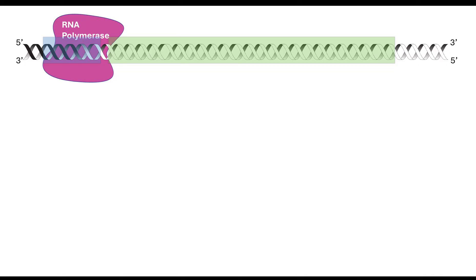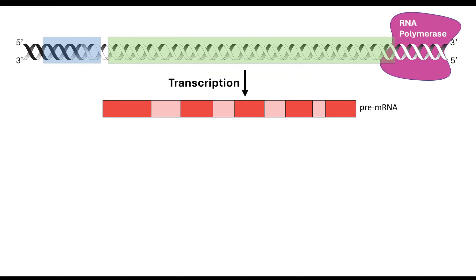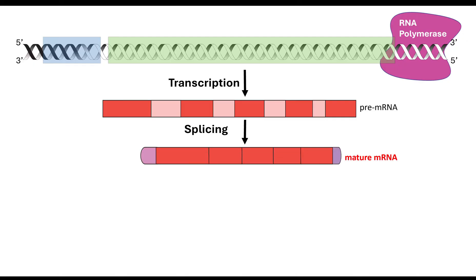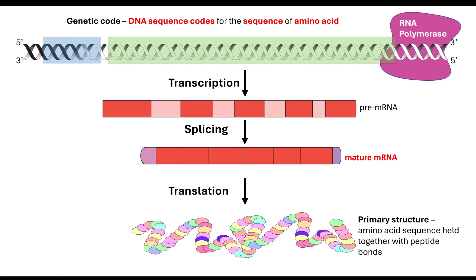Let's just remind ourselves: we have our DNA, and our DNA will be transcribed to produce pre-mRNA. Through the process of splicing, we will end up with our mature mRNA, and that will then be translated to give us our polypeptide chain. So our genetic code — that DNA sequence — codes for the sequence of amino acids, and that sequence of amino acids is our primary structure of our protein, which is held together by peptide bonds.